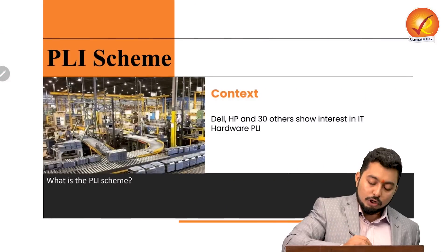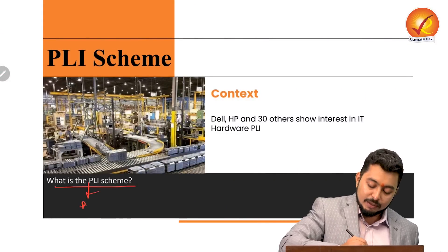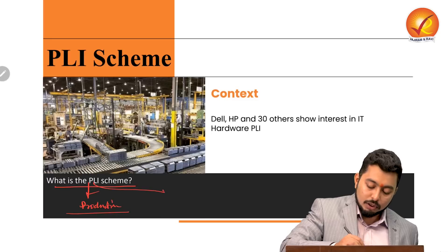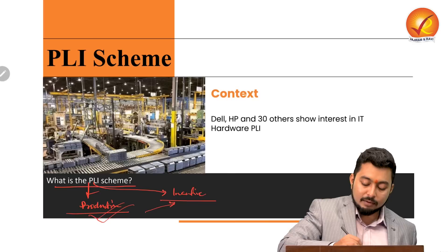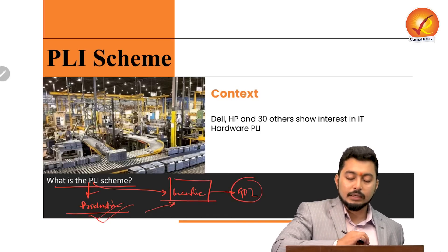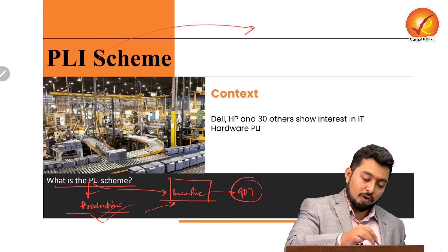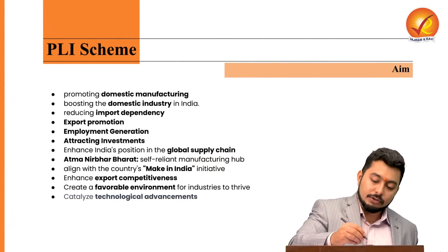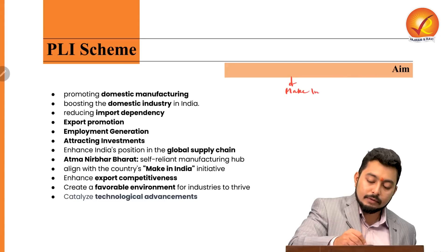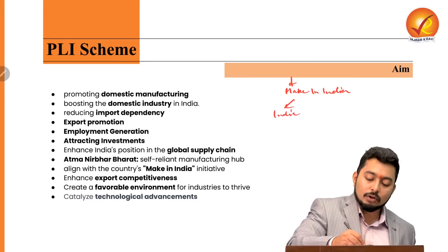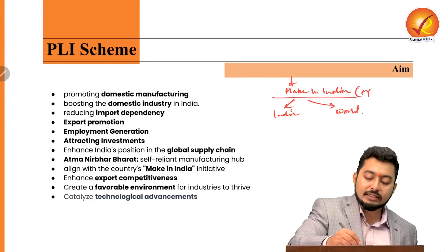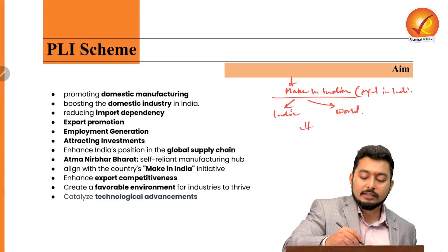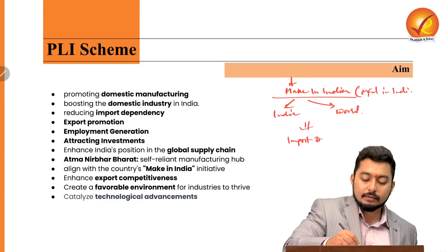The PLI scheme pertains to GS3. PLI means Production Linked Incentive — it is directly linked to production/manufacturing of goods and tied to incentives. If one produces more, they get more incentives from the Government of India. These PLI schemes have been launched for approximately 14 sectors. The idea behind PLI is to go for more 'Make in India' — whether for India or for the world — which reduces import dependency and boosts export potential.